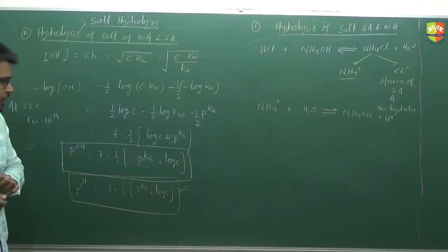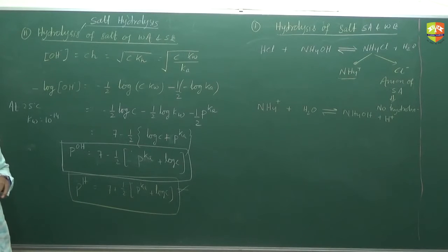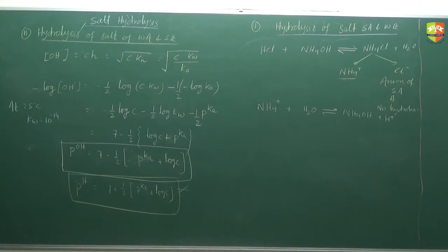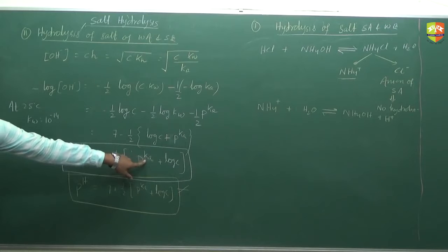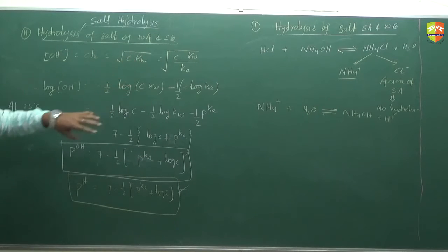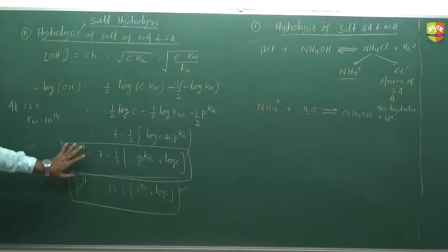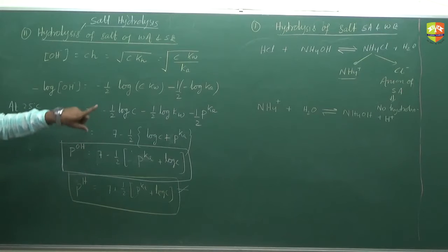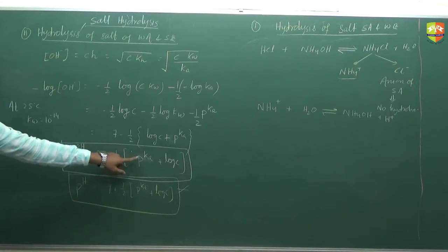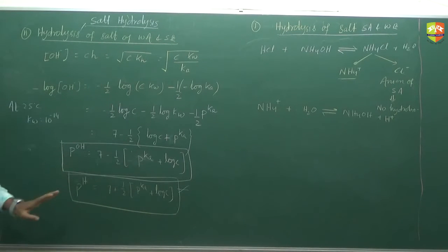Tell me the expression for pH for this. Instead of Ka, you get Kb over there because it is a base, so the base equilibrium constant is Kb, not Ka. So this is going to be 7 minus half of pKb plus log C for pH. The pK here becomes pKb. I won't derive this.